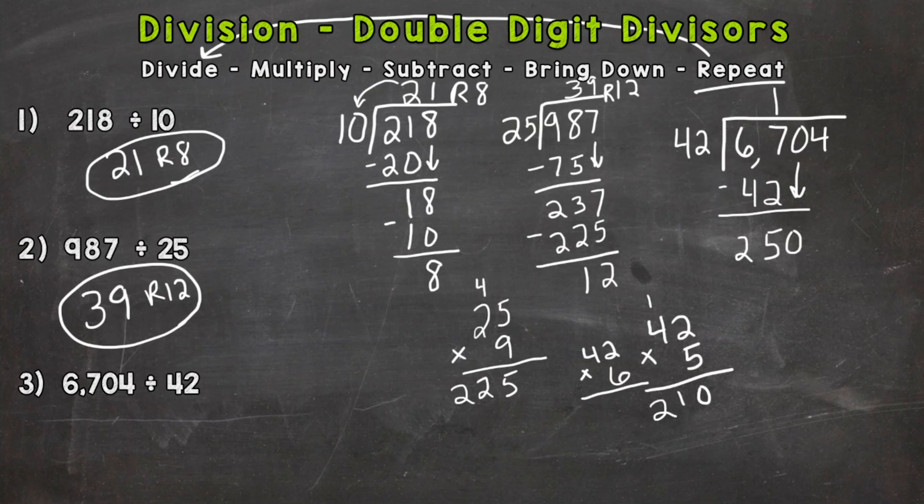6 times 2 is 12, 6 times 4 is 24, plus that 1 is 25. So 252—that's a little, I know it's closer, but it's too much, it's high, it went above 250. So the answer is 5, which goes above the 0 there. Now we need to come back around and multiply: 5 times 42, which we already did down here, is 210. Subtract: 250 minus 210 is 40.